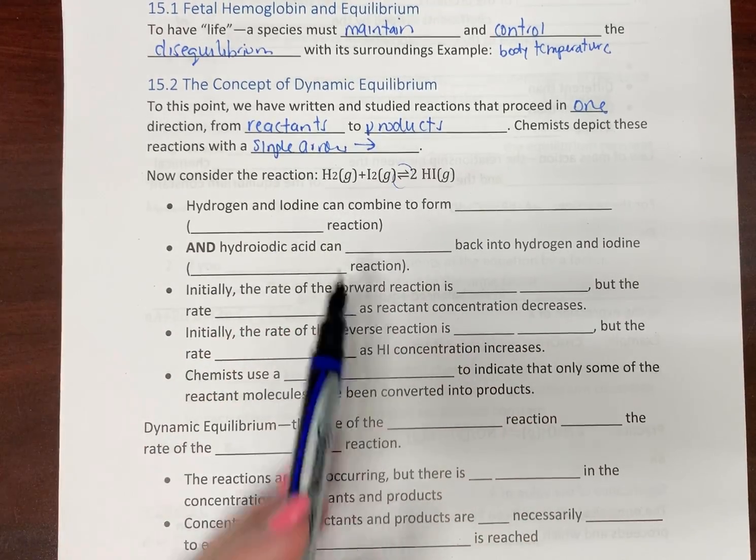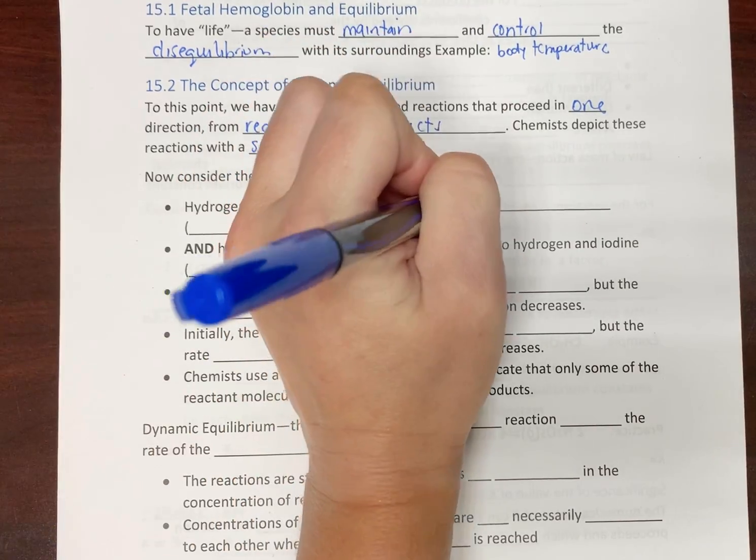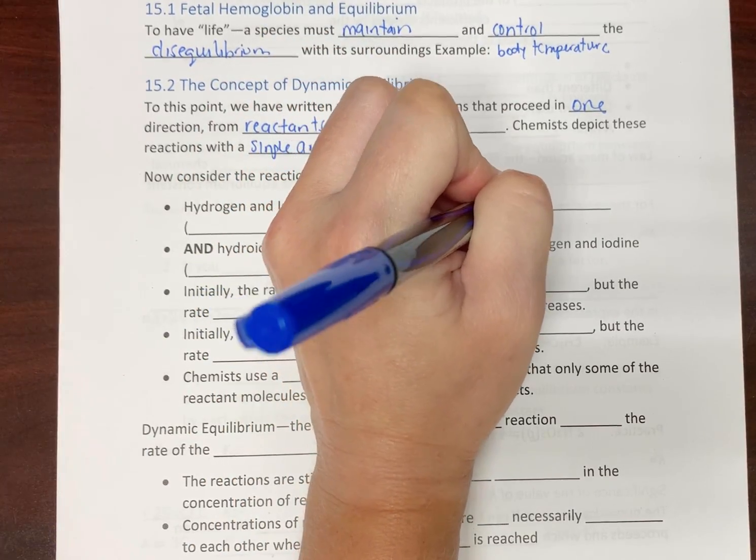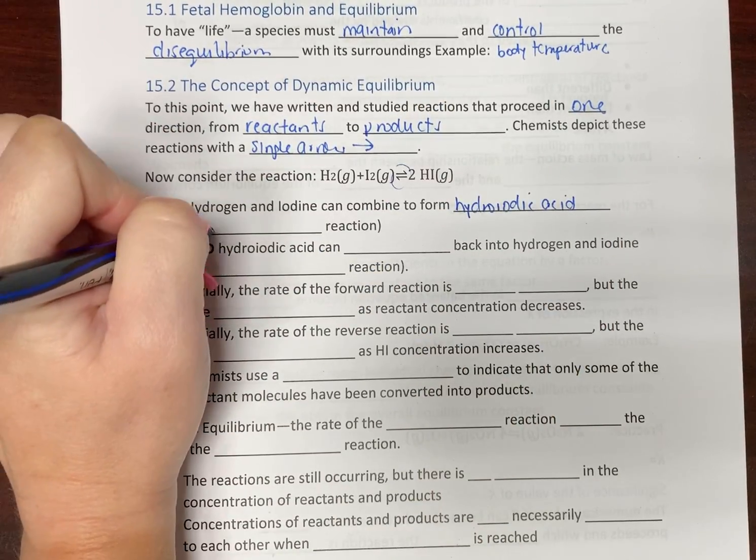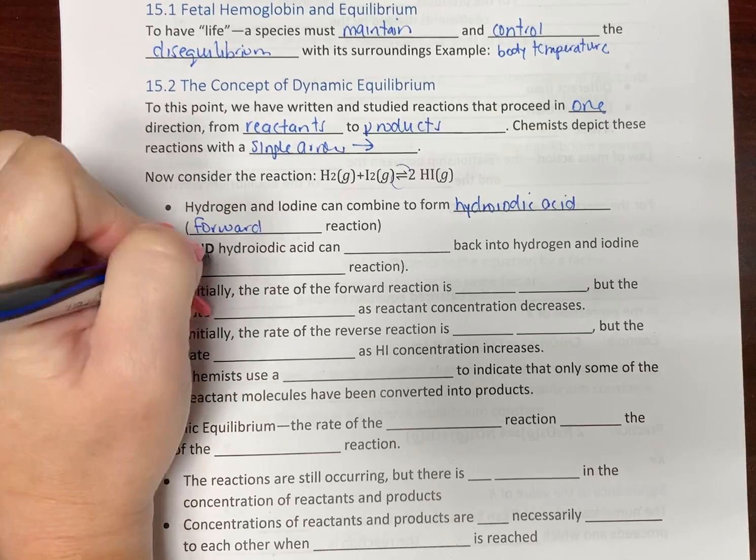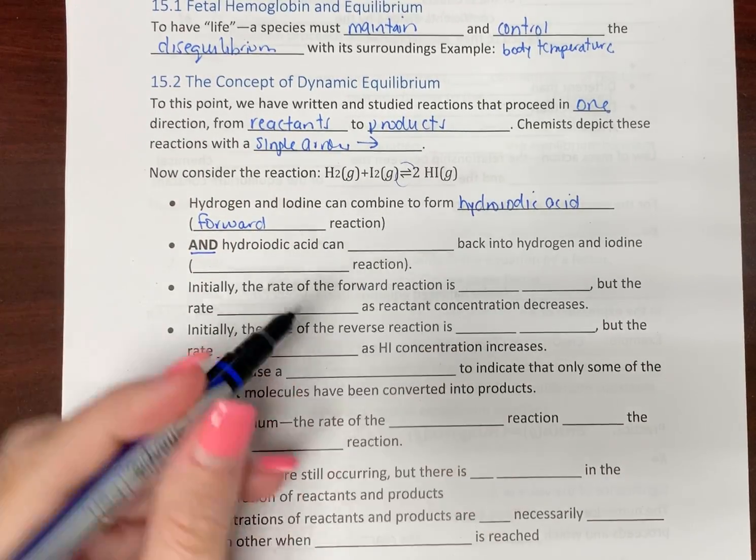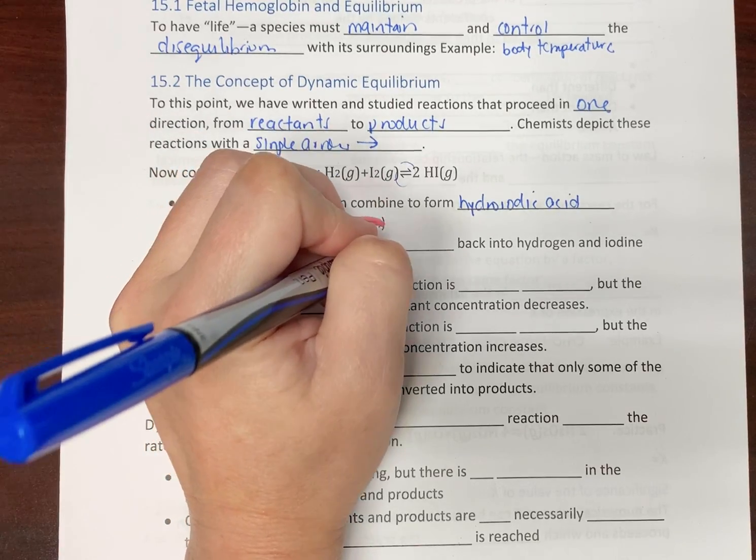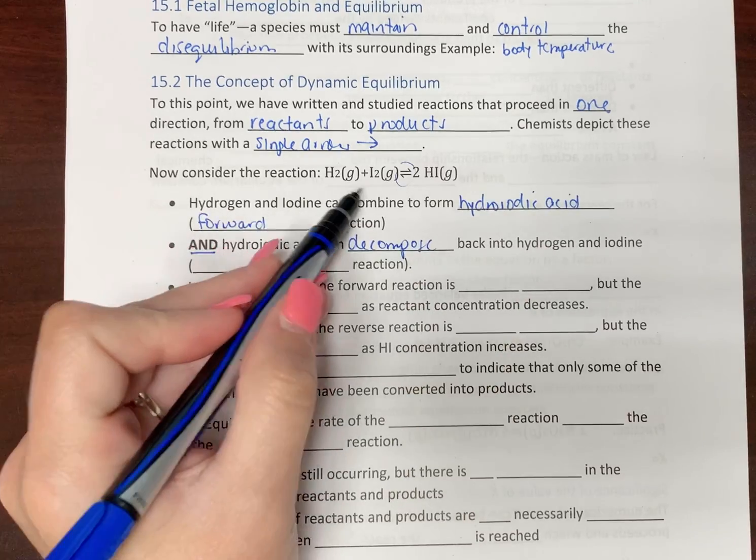What does this mean when we see an equation like this? Hydrogen and iodine can combine in order to form hydroiodic acid, so this would be our forward reaction. And also, hydroiodic acid can decompose back into the hydrogen and iodine, and that would be the reverse reaction.